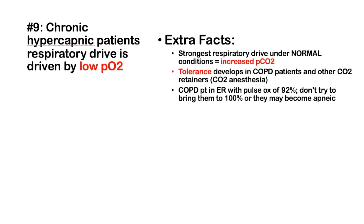Number 9: Chronic hypercapnic patients have a respiratory drive driven by a low partial pressure of oxygen. Normally, an increased pCO2 drives breathing. However, when CO2 reaches around 70 mmHg, the respiratory center undergoes CO2 anesthesia — a tolerance — and instead becomes responsive to low pO2. Clinically, if a COPD patient arrives with a pulse ox of 92% and you administer 100% oxygen, they may become apneic because their drive depends on low pO2, not pCO2.